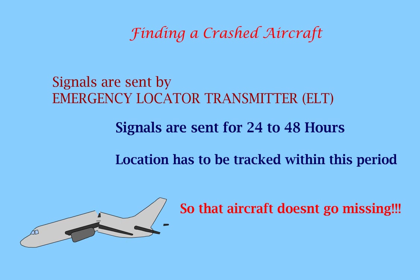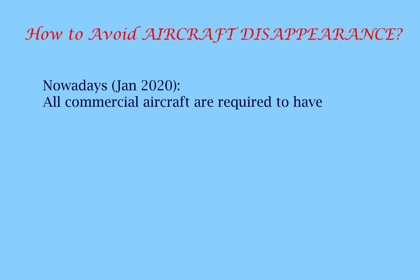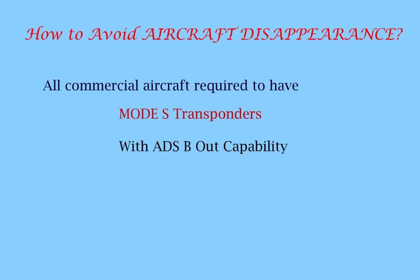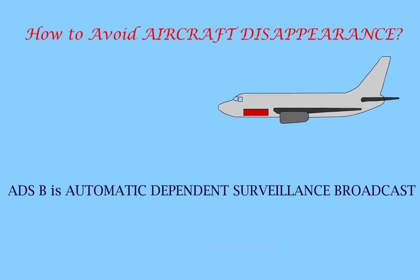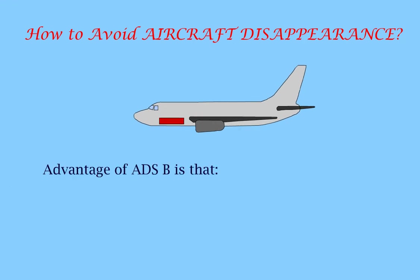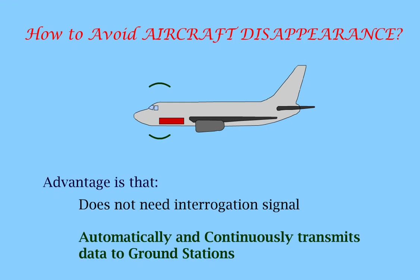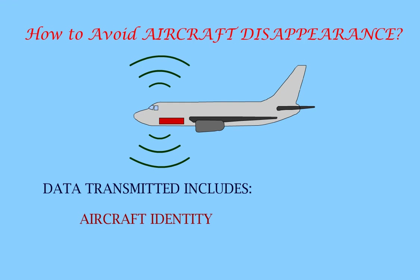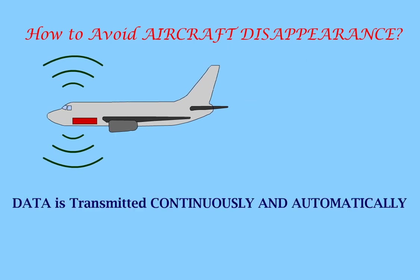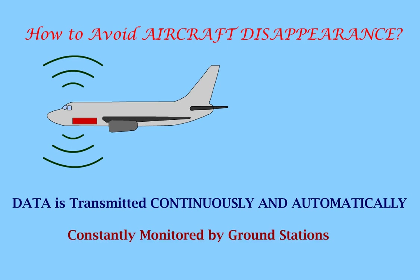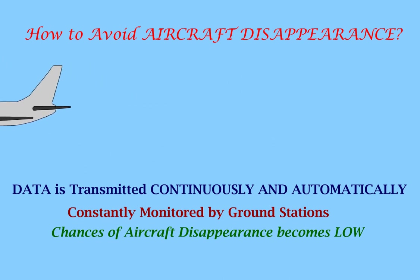To avoid any aircraft disappearance, all commercial aircraft nowadays are required to have Mode S transponders with ADSB-OUT capability. ADSB stands for Automatic Dependent Surveillance Broadcast. The advantage of ADSB is that it does not need an interrogation signal. It automatically and continuously sends data to ground stations. The data transmitted includes aircraft identity, GPS position, speed, and any other information related to the aircraft. As the data is transmitted continuously and automatically, it is constantly monitored by the ground stations, which means the chances of an aircraft disappearance becomes low.